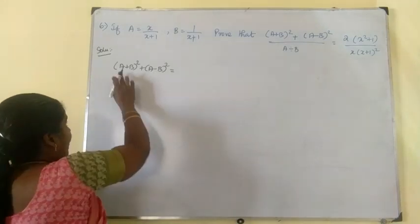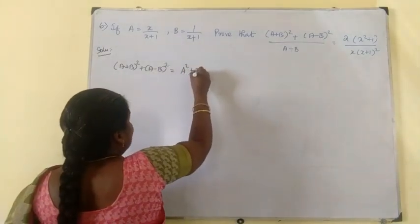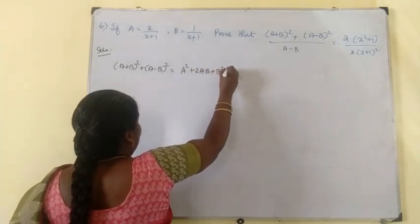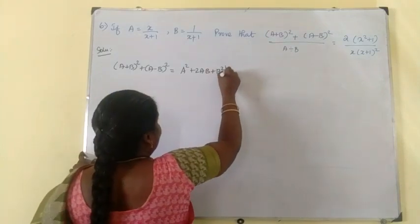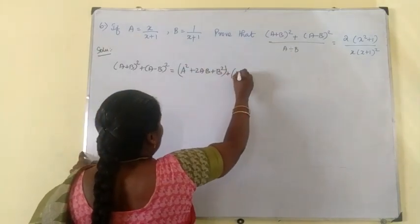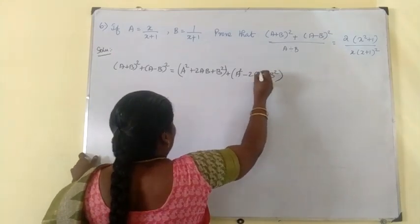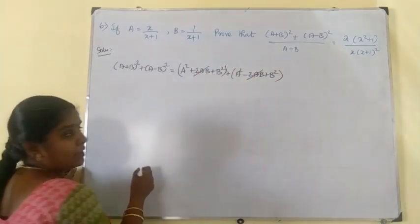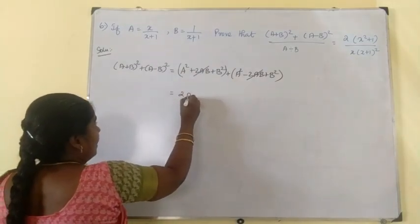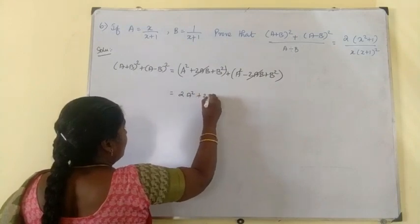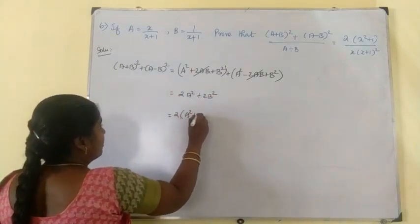We apply the whole square formulas. A plus b the whole square is a square plus 2ab plus b square. A minus b the whole square is a square minus 2ab plus b square. Adding them: the 2ab and minus 2ab cancel, giving a square plus a square is 2a square, and b square plus b square is 2b square. So the numerator simplifies to 2 into a square plus b square.